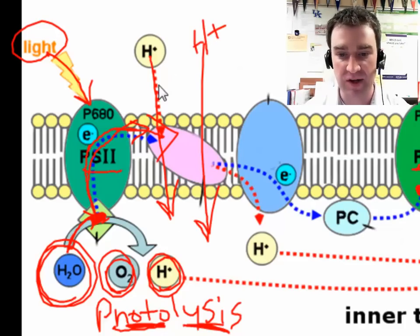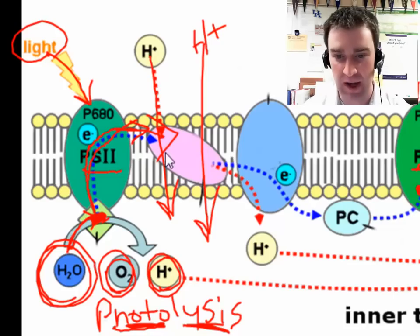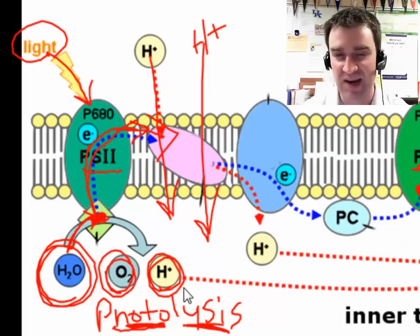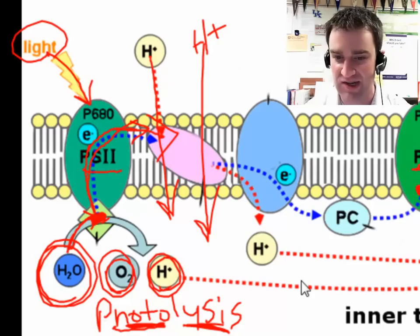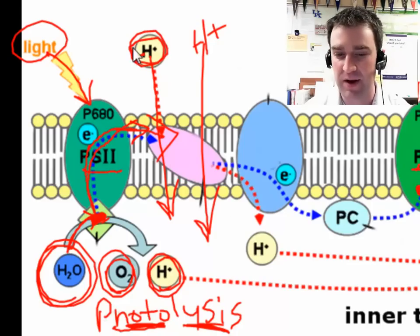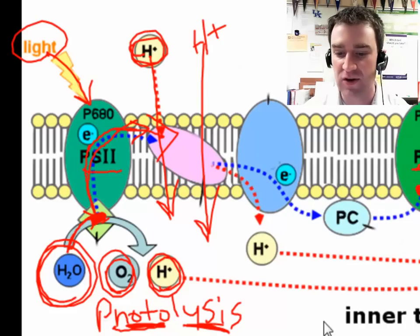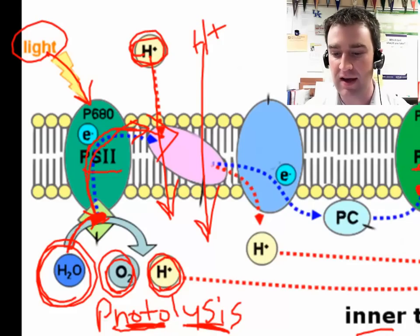Once again, we're pumping H+ to one side. The direction of pumping is different than in respiration — in this case, the protons are actually being pumped out of the stroma into the innermost space. So they're actually being pumped inward in the light reactions of photosynthesis.